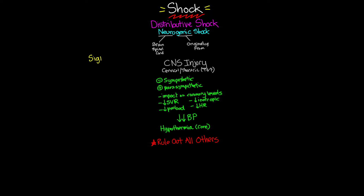Let's talk about the signs we would see in a patient with neurogenic shock. As always, we'll see decreased blood pressure or hypotension, resulting from that decreased systemic vascular resistance. One of the telltale signs is that normally the body would compensate by activating the sympathetic response and increasing heart rate and vasoconstriction, but in neurogenic shock that ability is gone — so the patient will have a decreased heart rate or bradycardia. We'll also often see a decreased cardiac output, as well as a decrease in CVP and pulmonary capillary wedge pressure, due to that lack of preload. Additionally, the patient may exhibit hypothermia — but unlike other shock states, they will have warm, dry extremities.